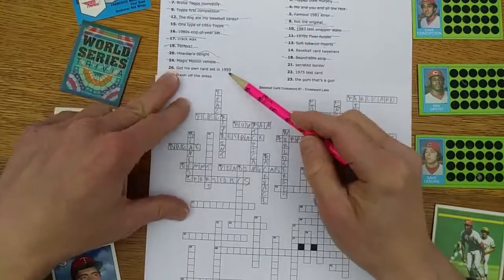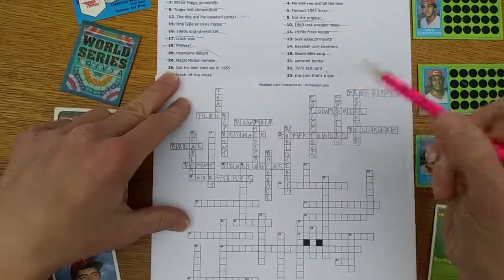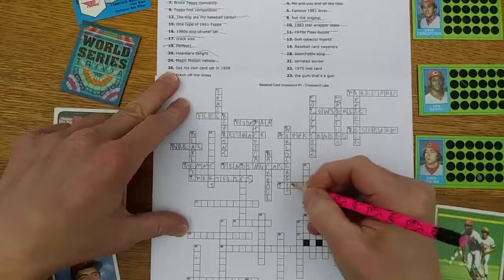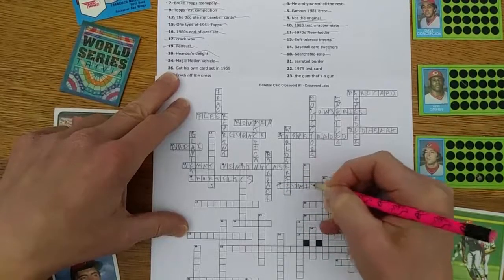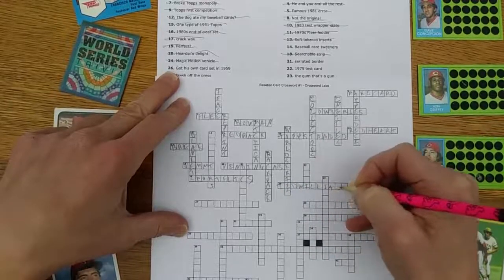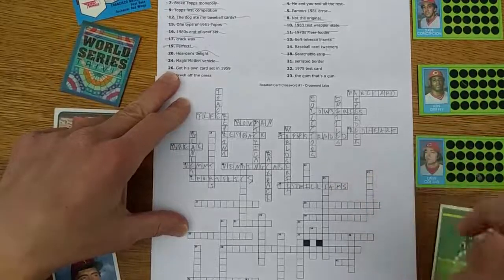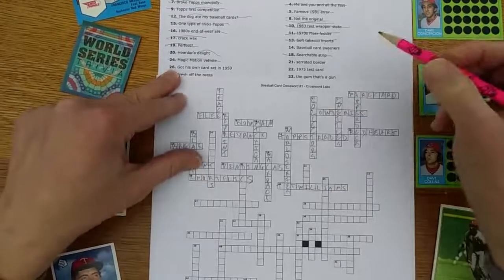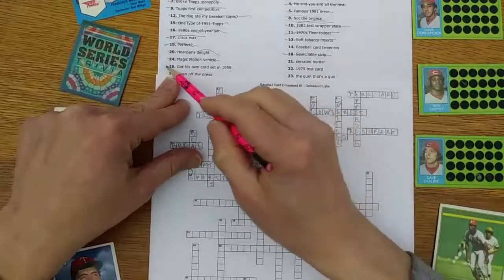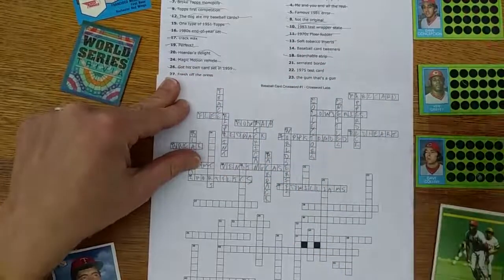He got his own card set in 1959. That would be Ted Williams with the aforementioned Fleer who could not issue cards of current players with the exception of Ted, because they signed him to an exclusive deal which excluded him from Topps.